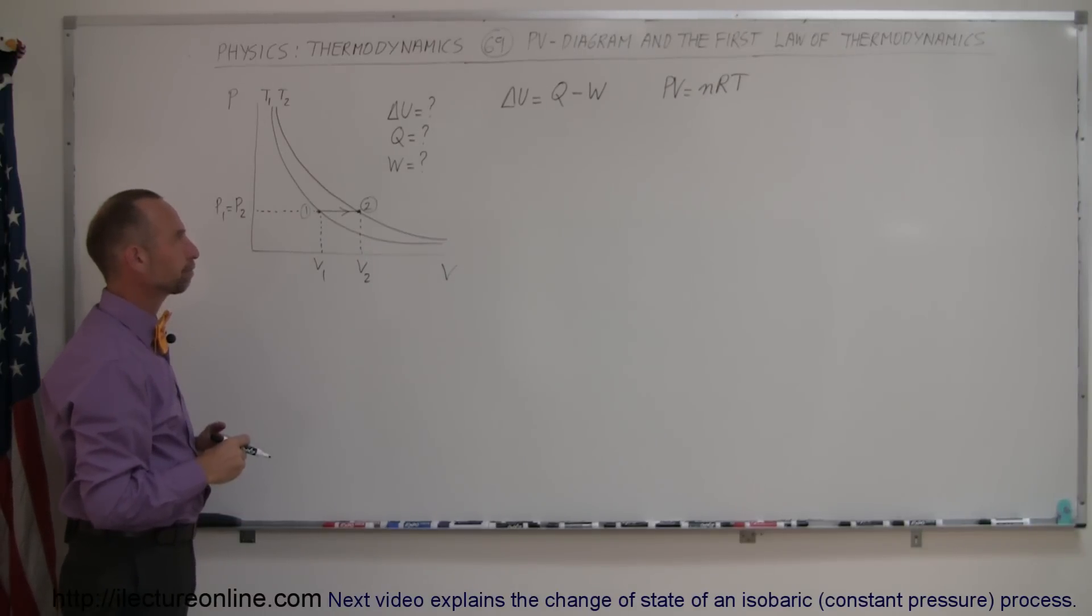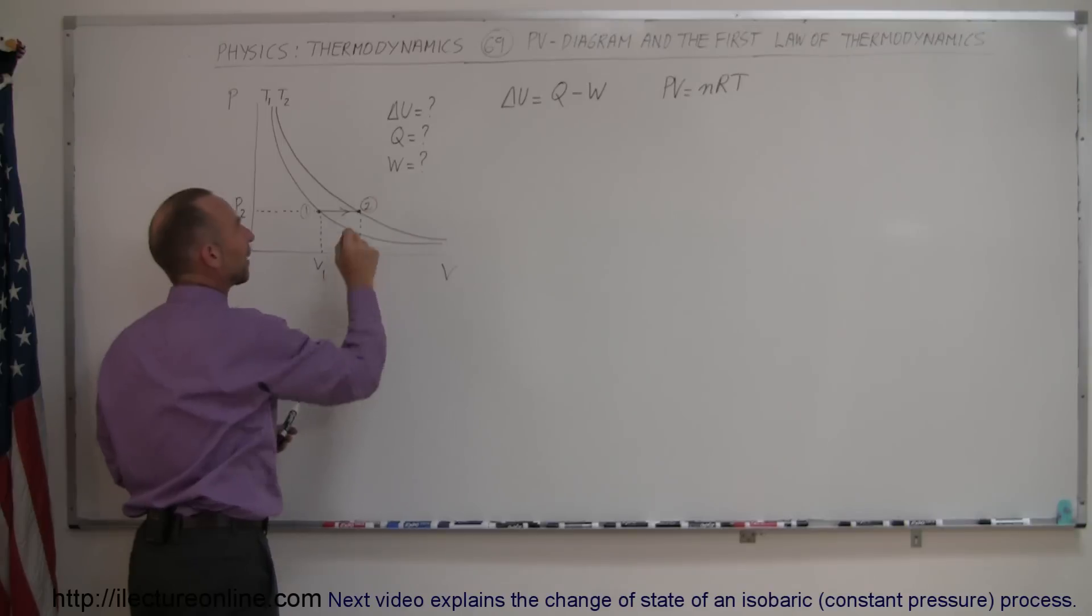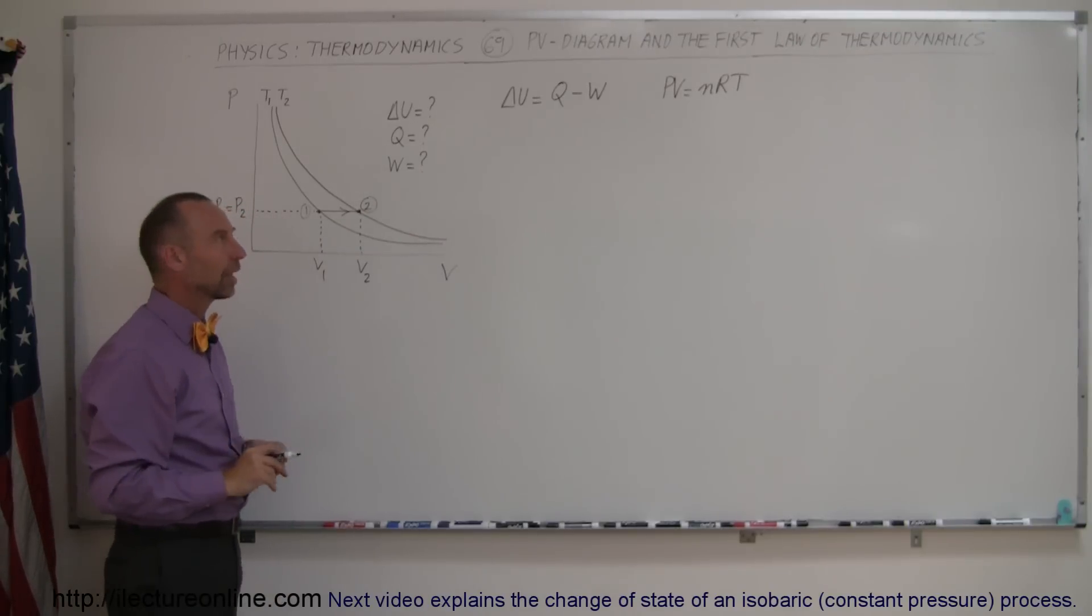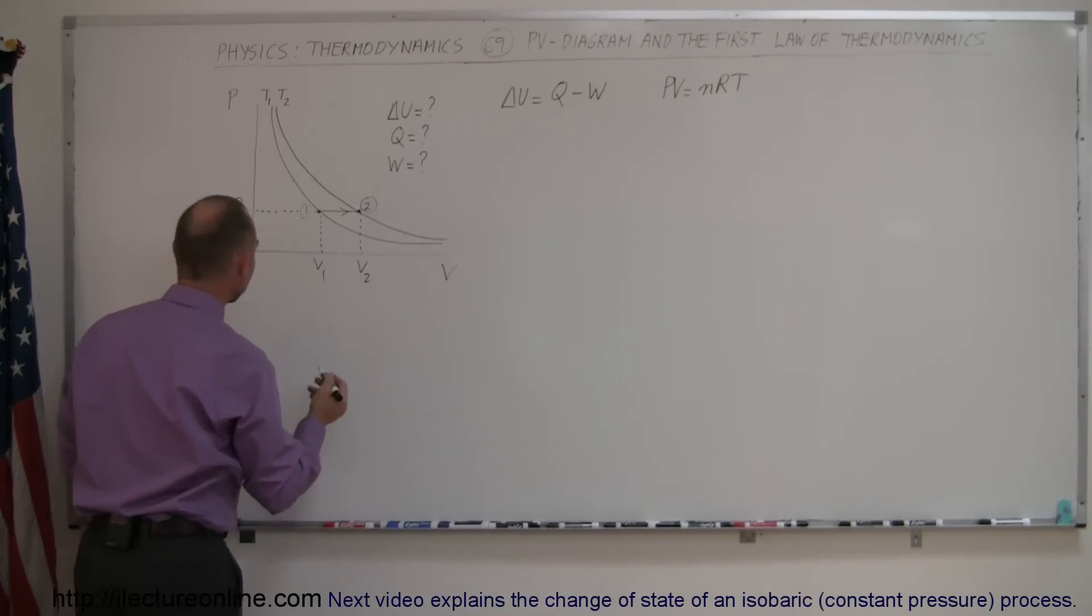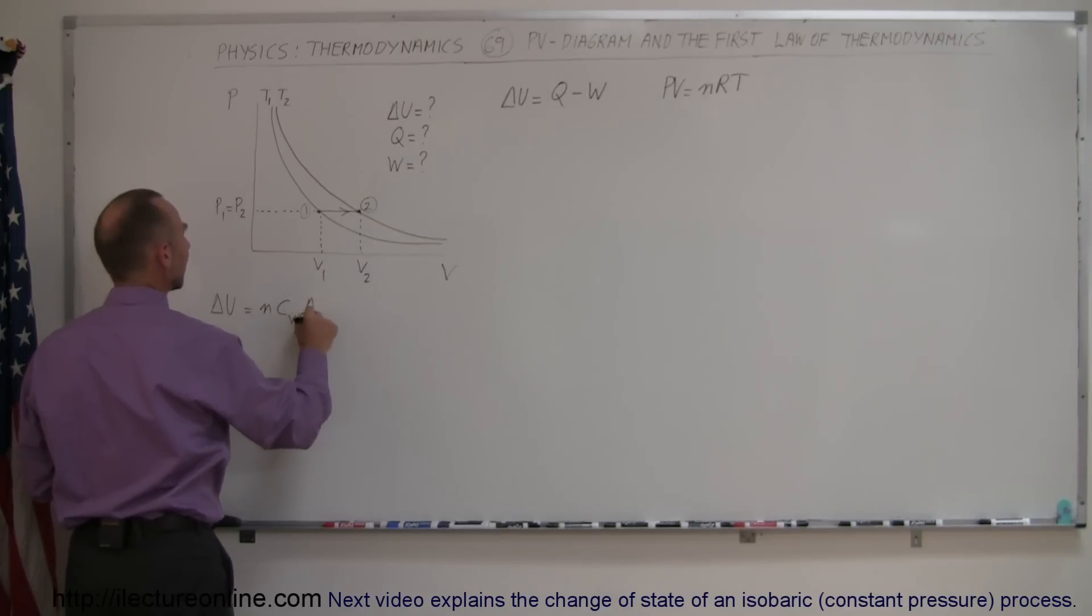Now where do we start? Well we're supposed to find the change in internal energy, we're supposed to find the heat added to the gas, and we're supposed to find the work done by the gas. Now the change in internal energy is very straightforward because we know that delta U is equal to nC sub V delta T.